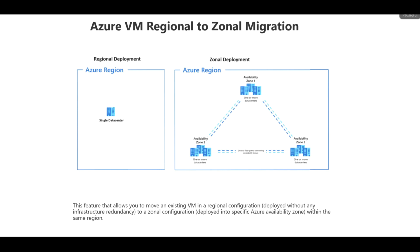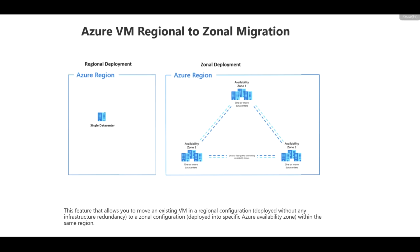Let's see how this feature is helpful for the customer. To understand this feature, first we need to get into the concept of what is a region and what is availability zones or the zonal concept. This feature allows you to move existing VMs in a regional configuration — deployed without any infrastructure redundancy — to a zonal configuration deployed into specific availability zones within the same region.